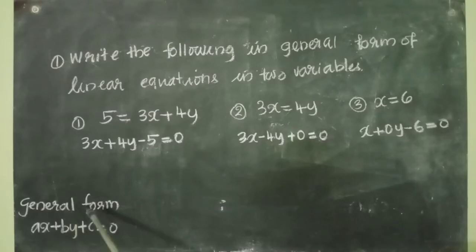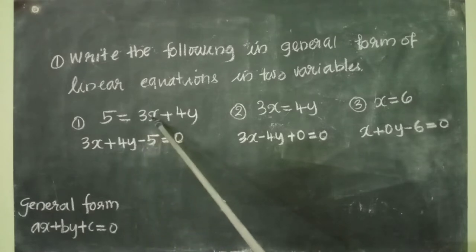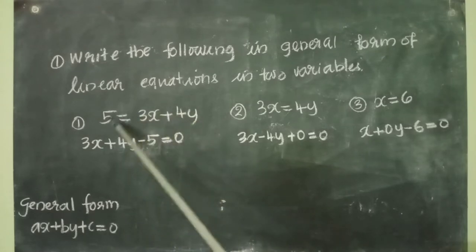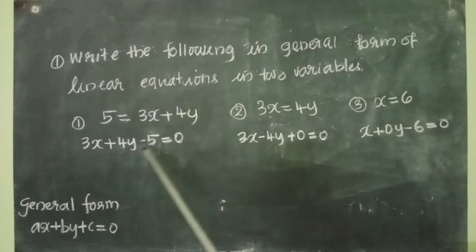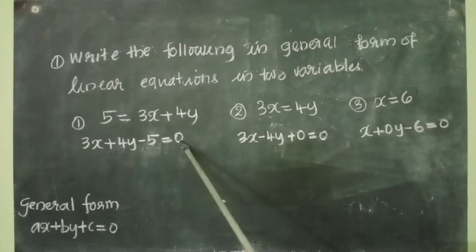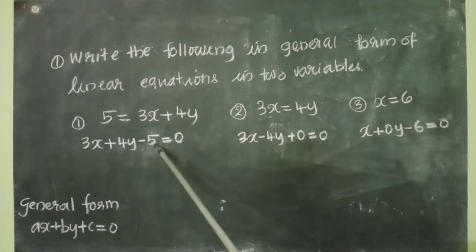The general form is ax plus by plus c equal to 0. Here 3x plus 4y is on this side; we can take this 5 also to the right side. We get 3x plus 4y minus 5 equal to 0. Now a equal to 3, b equal to 4, c equal to minus 5.